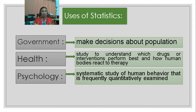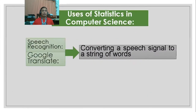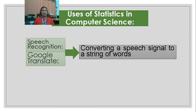With this illustration, we would say that statistics is very important — in the government, in health, in psychology, and not only these three but even in other fields. There is statistics, and statistics is very important. Especially in computer science, statistics plays a vital role. So what are the uses of statistics in computer science?